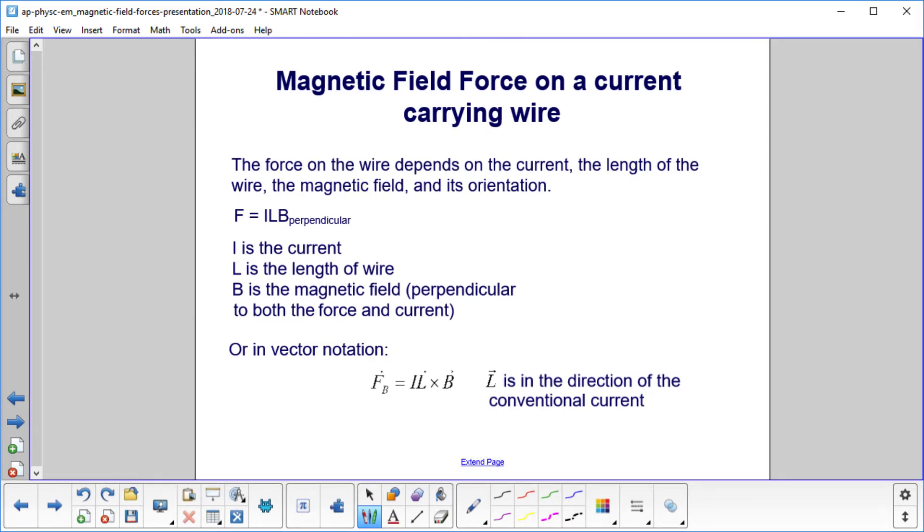The force on the wire depends on the current, the length of the wire, the magnetic field, and its orientation. F equals ILB_perpendicular. Note that B is the magnetic field that has to be perpendicular to the current to generate a force. All three of these are perpendicular to each other: I (the direction of the current), the force, and the magnetic field.